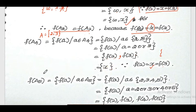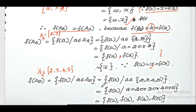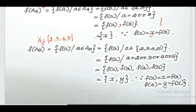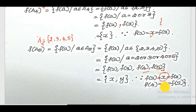For f(A5): A5 = {2, 3, 4, 5}, so a takes the value 2, 3, 4, or 5. Substituting, f(A5) = {f(2), f(3), f(4), f(5)}. Now f(2) = x, f(3) = x, f(4) = y, and f(5) = y. Removing repetitions, f(A5) = {x, y}.